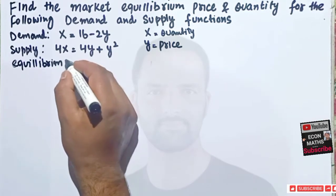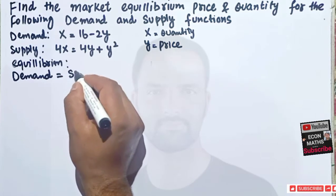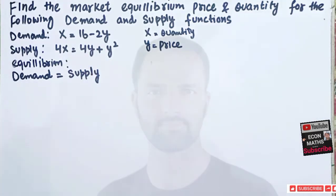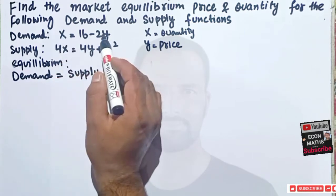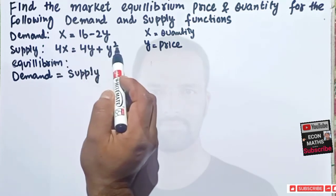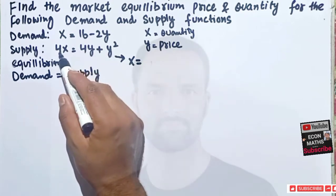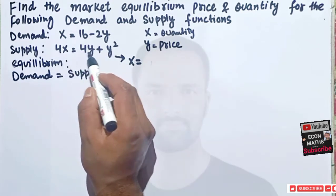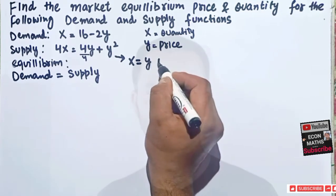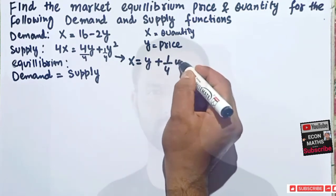Equilibrium requires that market demand should be equal to market supply. So we need to equate these two functions. First I'll rearrange the supply function by taking the 4 on the right-hand side. Transposing 4 to the RHS, it divides every term: 4/4 cancels to give Y, and we get (1/4)Y².